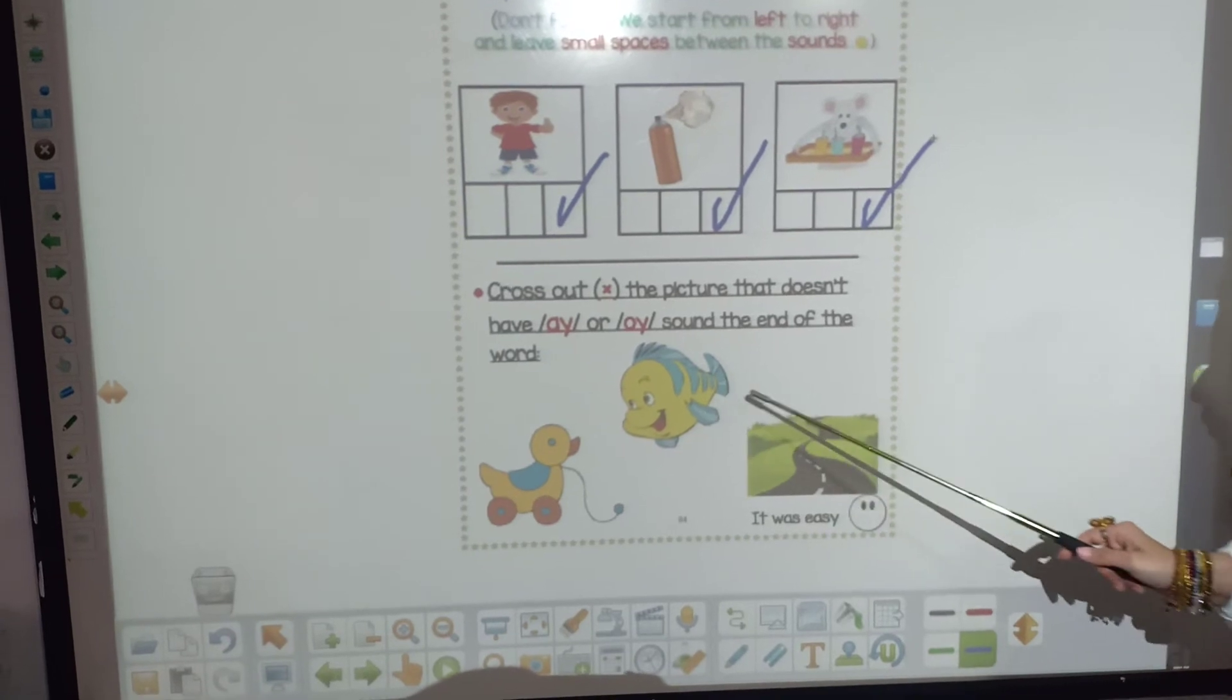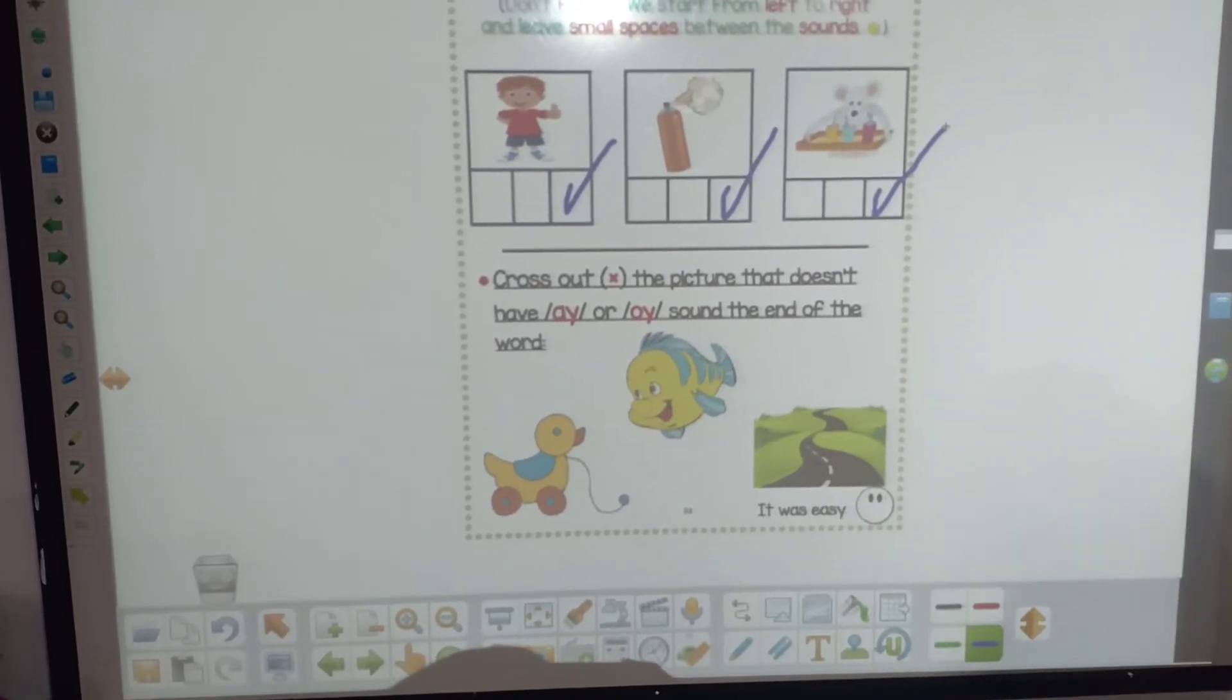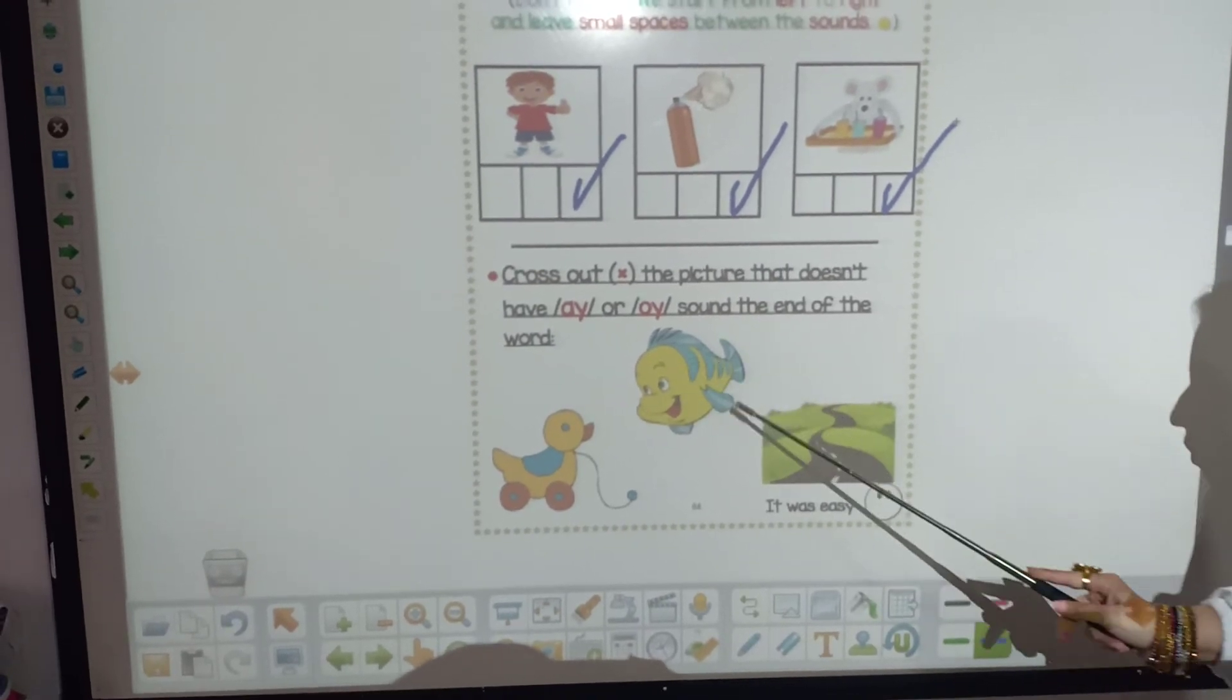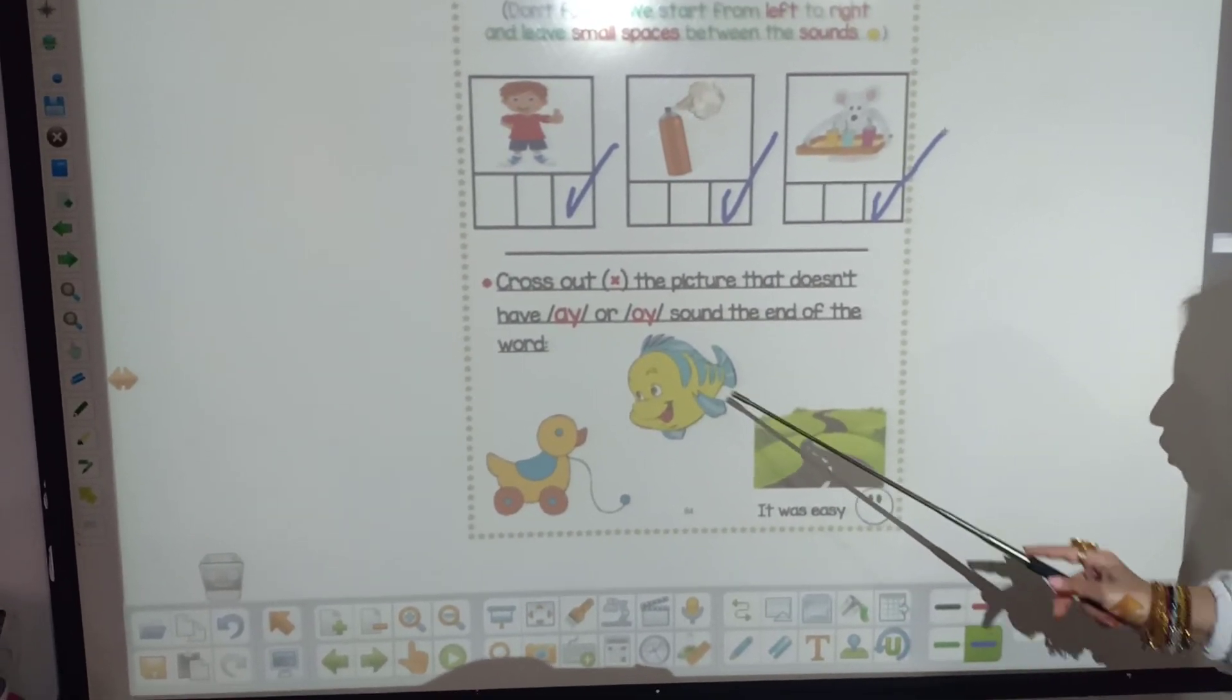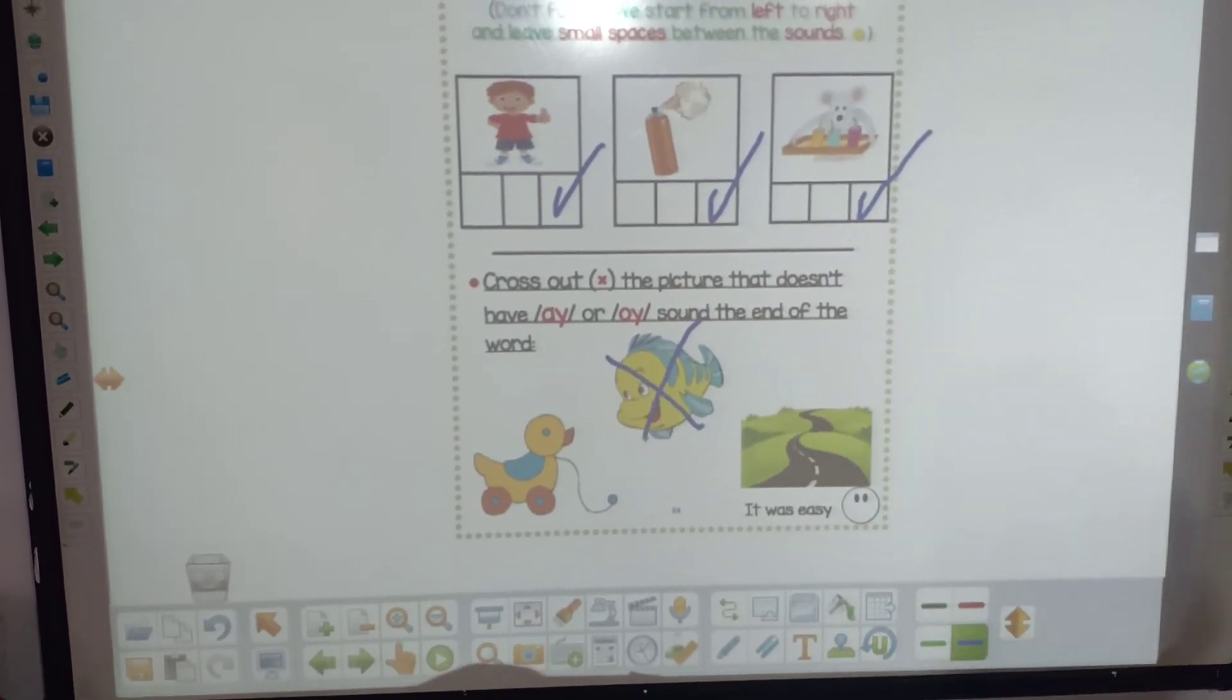The next question, you are going to cross out the picture that doesn't have ay or oy sound at the end of any word. This picture is fish. Fish has oy or ay? No. I am going to cross it out.